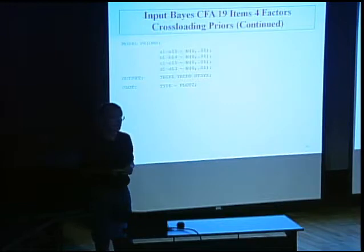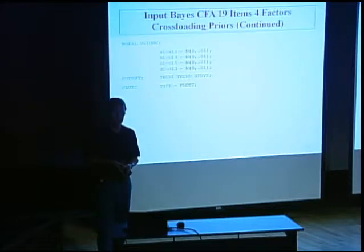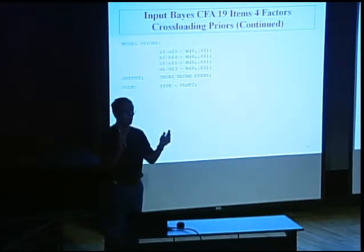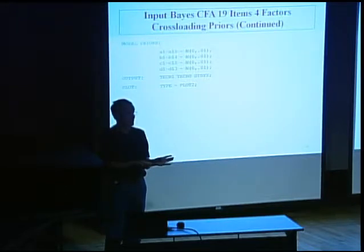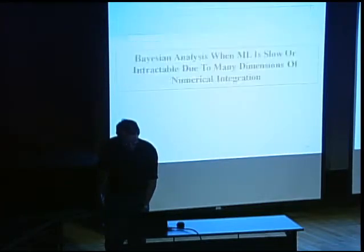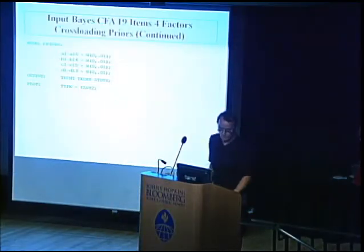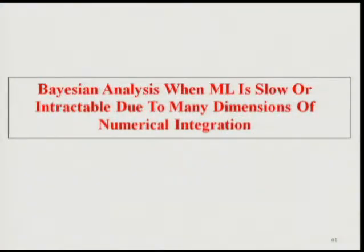If you change the variance, the PPP and DIC will change. For these data, the maximum DIC was for variance 0.01, but you could get a better p-value with variance 0.05. However, that would mean a prior range of minus 0.44 to plus 0.44, which is too wide. So there's a trade-off between model fit and an honest prior. That's how you can think about these priors — not as an artificial concept, but as something real corresponding to your substantive reasoning.